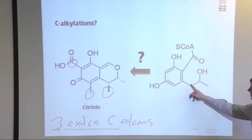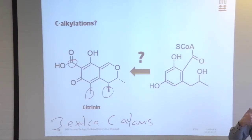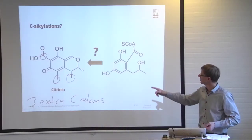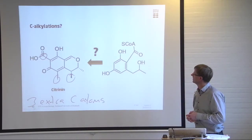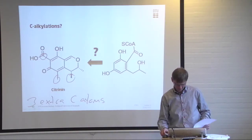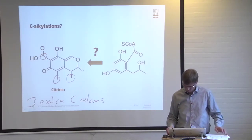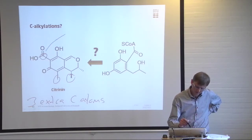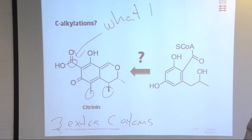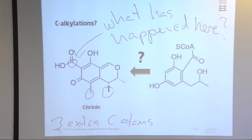We have one, two, three, four, five, six, seven, eight, nine, ten carbons - so we would originally consider it a pentaketide. But the final number of carbons in citronin is thirteen, because SAM added three extra methyl groups.